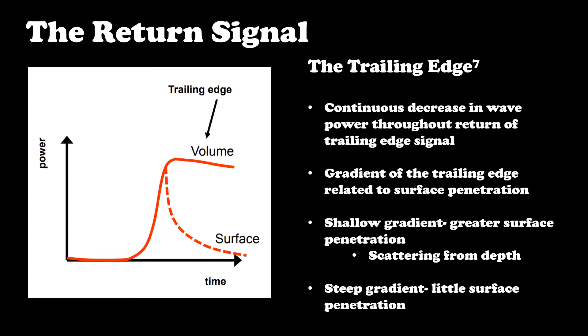The trailing edge can be seen on a power-time plot as a decrease in power. This is related to penetration of the surface below. There is a slow tailing off when the pulse penetrates the surface material, so there is additional scatter from depth within the surface.